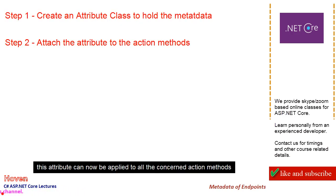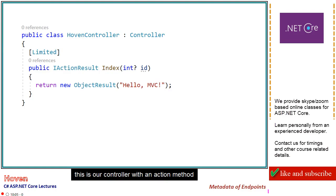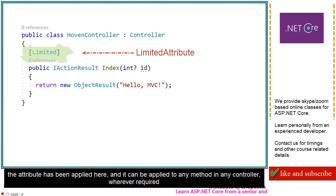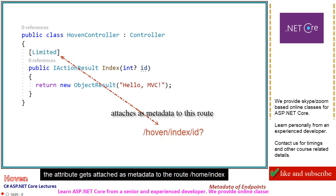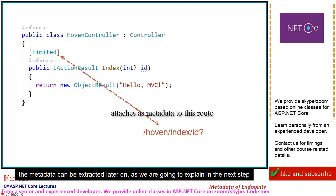This attribute can now be applied to all the concerned action methods. This is our controller with an action method — things have been kept simple for ease of explanation. The attribute has been applied here, and it can be applied to any method in any controller wherever required. The attribute gets attached as metadata to the route /home/index. The metadata can be extracted later on, as we are going to explain in the next step.